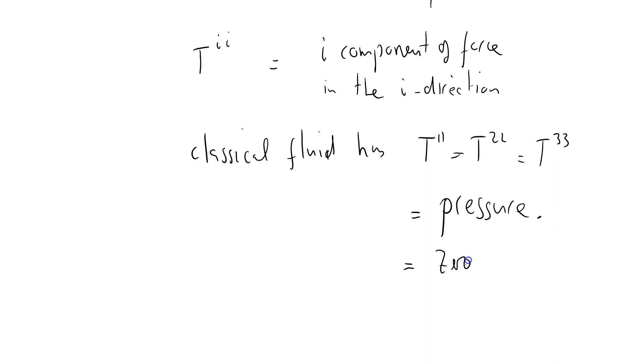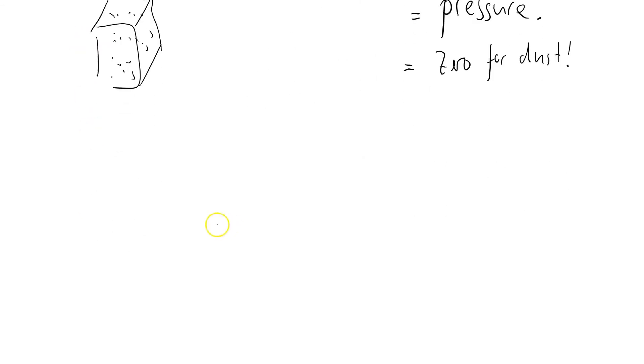Equals zero for dust. Why? Because dust particles, here's my control volume, dust particles just sit there. They don't interact. In fact, if they start to bounce around, if they start to exchange momentum with one another, then we've got a non-zero pressure. But for dust, we've got zero pressure. But for a classical fluid, a classical fluid has T11 equals T22 equals T33 equals this thing which we call the pressure.